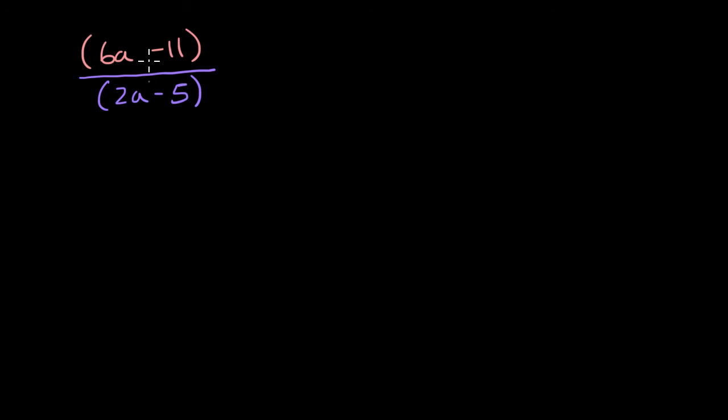One way to think about it, just like before, we could say that this is equal to question mark, or if we multiplied both sides by 2a minus five, we could say if I have question mark times (2a - 5), I am going to get 6a minus 11.